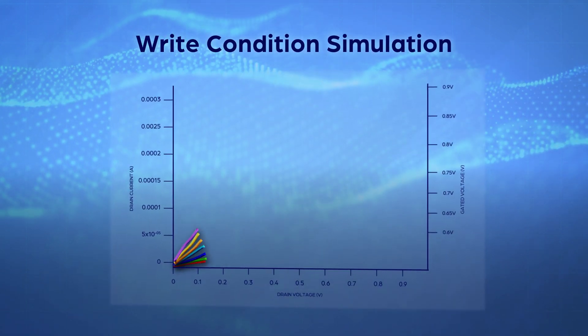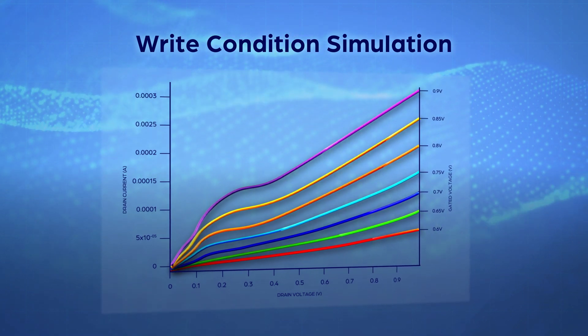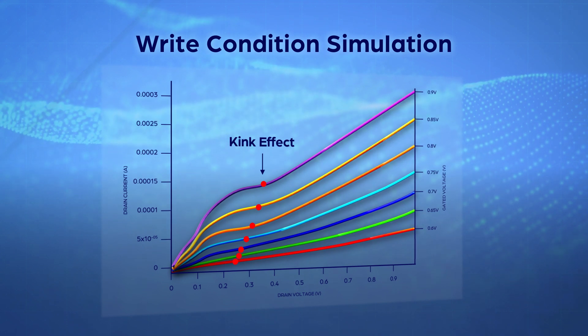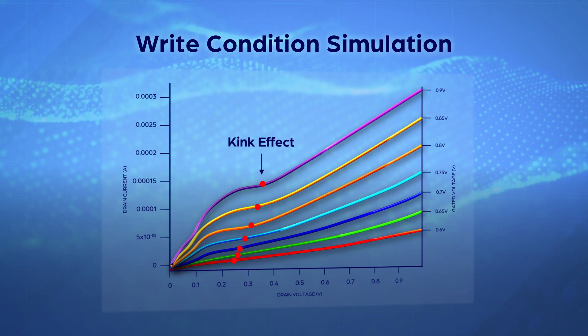For the write operation, 3D XDRAM can lower the required voltage for impact ionization, also called kink effect, to below 0.6V. This greatly reduces hot carrier degradation to improve cell endurance.